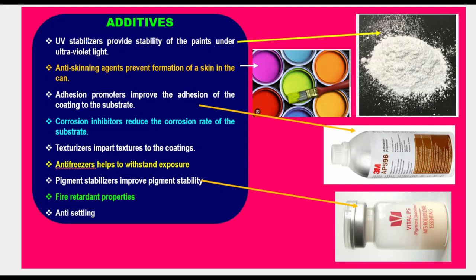Further additives include UV stabilizers, which provide stability of the paints under ultraviolet light; anti-skinning agents, which prevent formation of skin in the can; adhesion promoters, which improve the adhesion of the coating to the substrate; corrosion inhibitors, which reduce the corrosion rate of the substrate; texturizers, which impart texture to the coatings; anti-freezers; pigment stabilizers; and fire retardants with anti-settling properties.